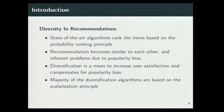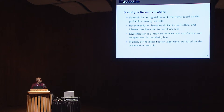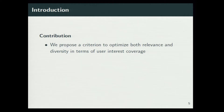Diversification also counters popularity bias. State-of-the-art algorithms are based on the scalarization principle, where they take two objectives — one corresponding to relevance and the other corresponding to diversity — and linearly combine them, explicitly trading off. Our contribution is that we propose an objective function which takes into account both relevance and diversity in a single function, so we don't actually have to explicitly trade off relevance and diversity. We frame the problem as a user interest coverage problem.